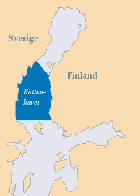The Bothnian Sea links the Bothnian Bay, also called the Bay of Bothnia, with the Baltic proper. Kvarken is situated between the two. Together, the Bothnian Sea and Bay make up a larger geographical entity, the Gulf of Bothnia, where the Bothnian Sea is the southern part. The whole Gulf of Bothnia is situated between Sweden to the west, Finland to the east, and the Sea of Åland and Archipelago Sea to the south.